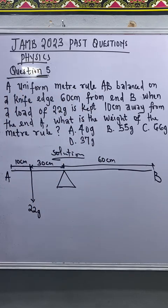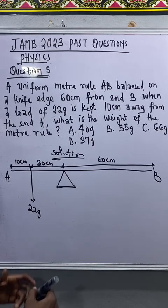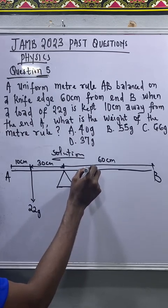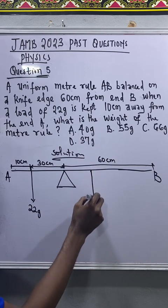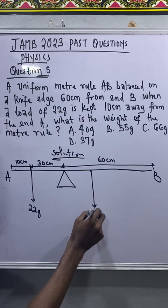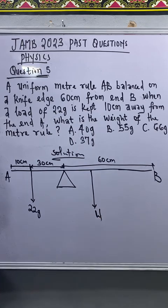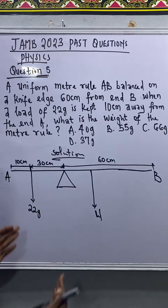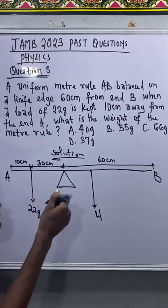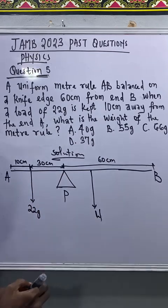Now since the metal rule is uniform, that means the weight of the metal rule will be concentrated at the midpoint, at 50 centimeter mark. Let's call it weight W. Now I will take moment about the pivot.